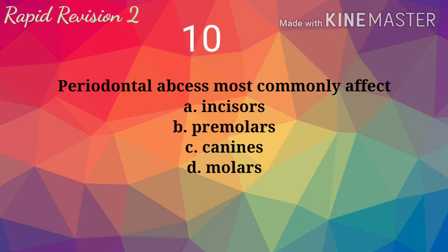Periodontal abscess most commonly affects: A. Incisors. B. Premolars. C. Canines. D. Molars. Answer is D: molars.